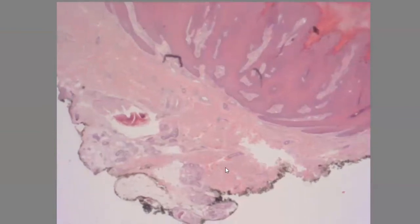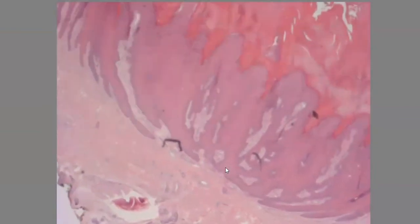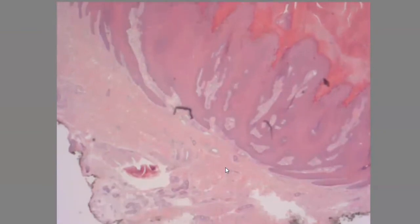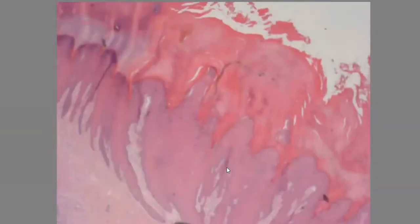So let's describe the Verruca vulgaris on low power first. From the top you can see here this hyperkeratotic layer, and you can also see this parakeratosis, which is retained nuclei, and you can appreciate this hyperpapillomatosis that is present on the epidermal surface.